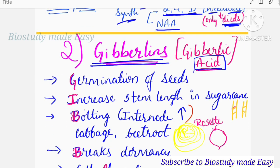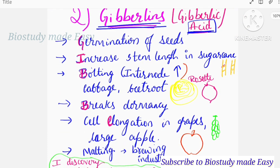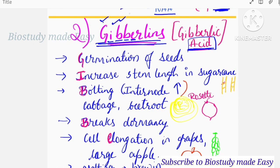Next is Gibberellins — gibberellic acid. To remember its functions, we use the mnemonic G-I-B-B-E. G stands for germination of seeds. I stands for increase in stem length — specifically in sugar cane, where gibberellins increase the internode length.